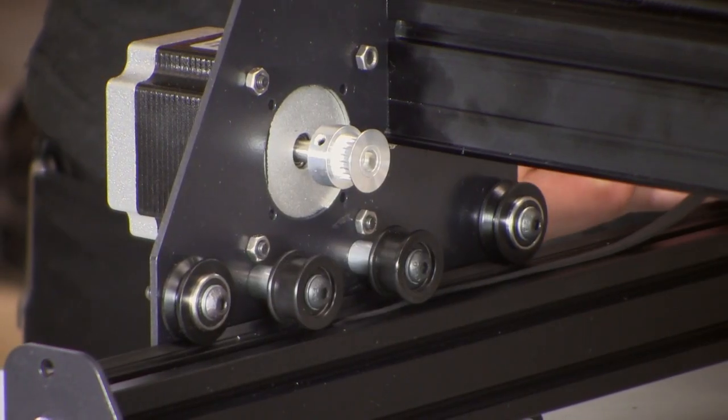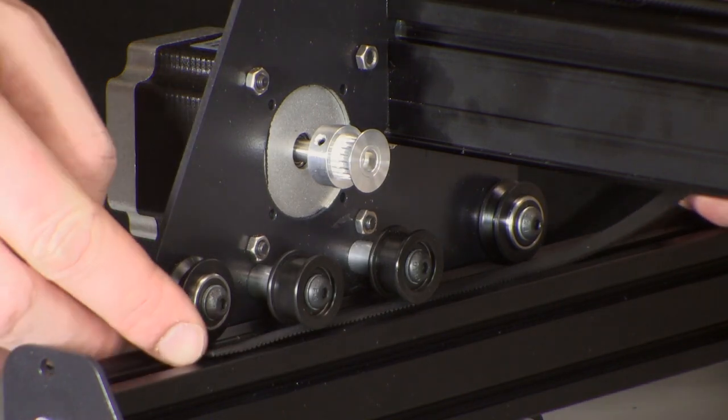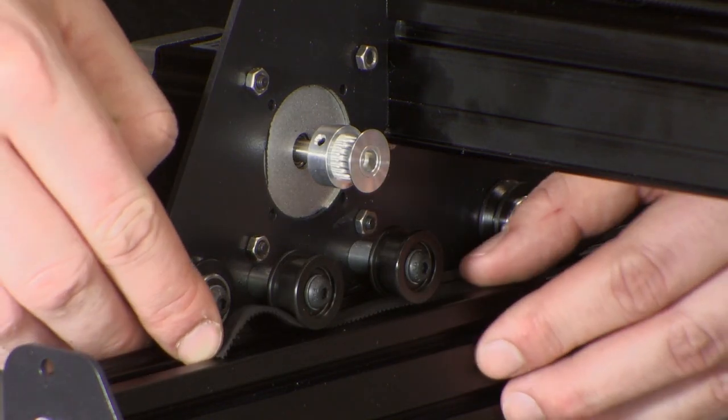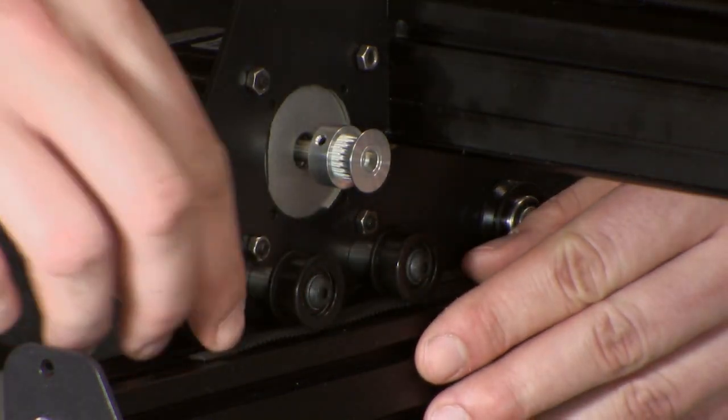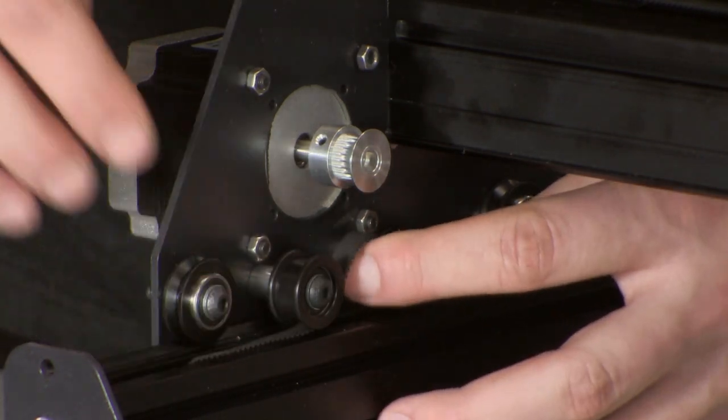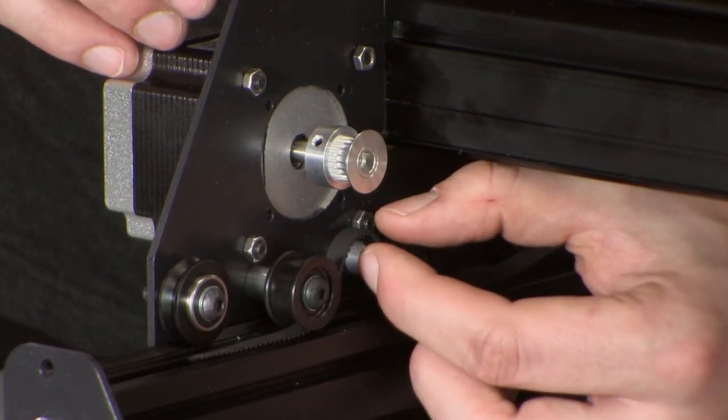Now we're going to put belting onto the Y-axis. You'll want to slide the belting underneath the two smooth idlers, and then pinch it together to make a loop, and you can pull that loop over the pulley.